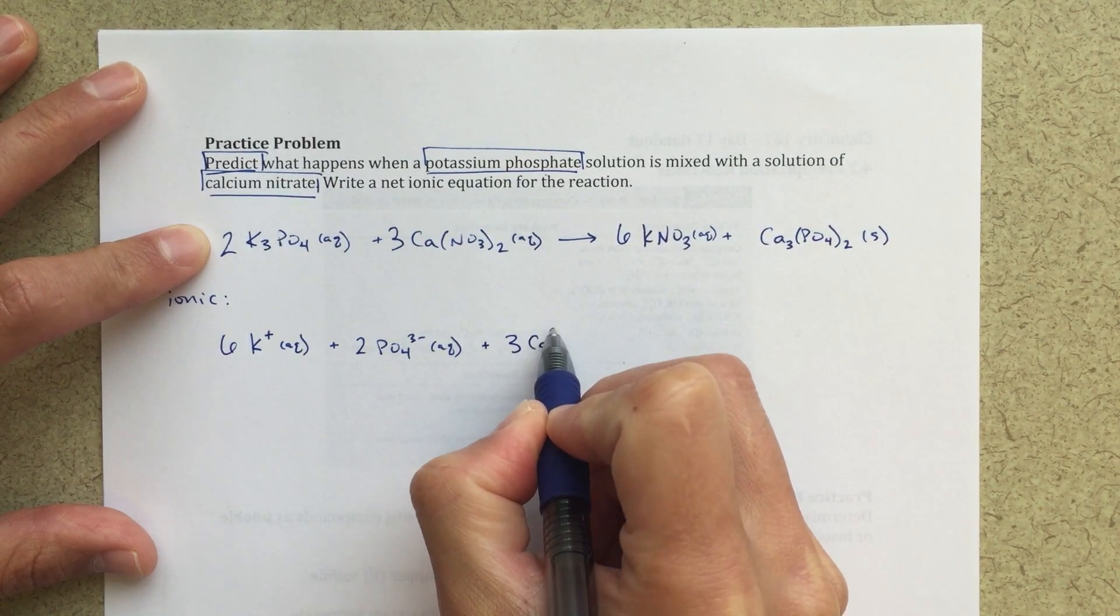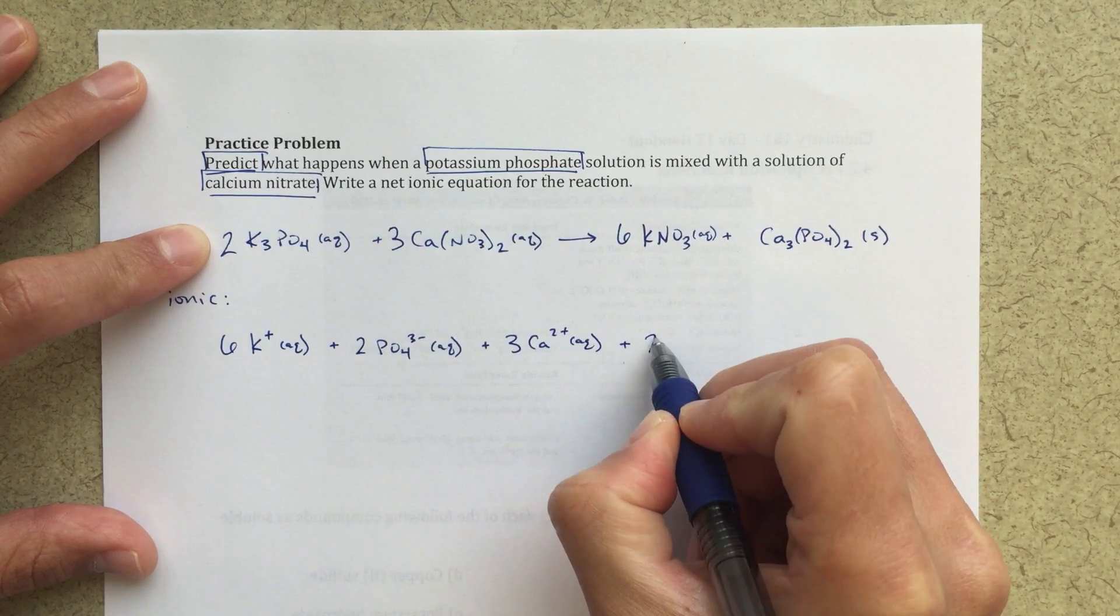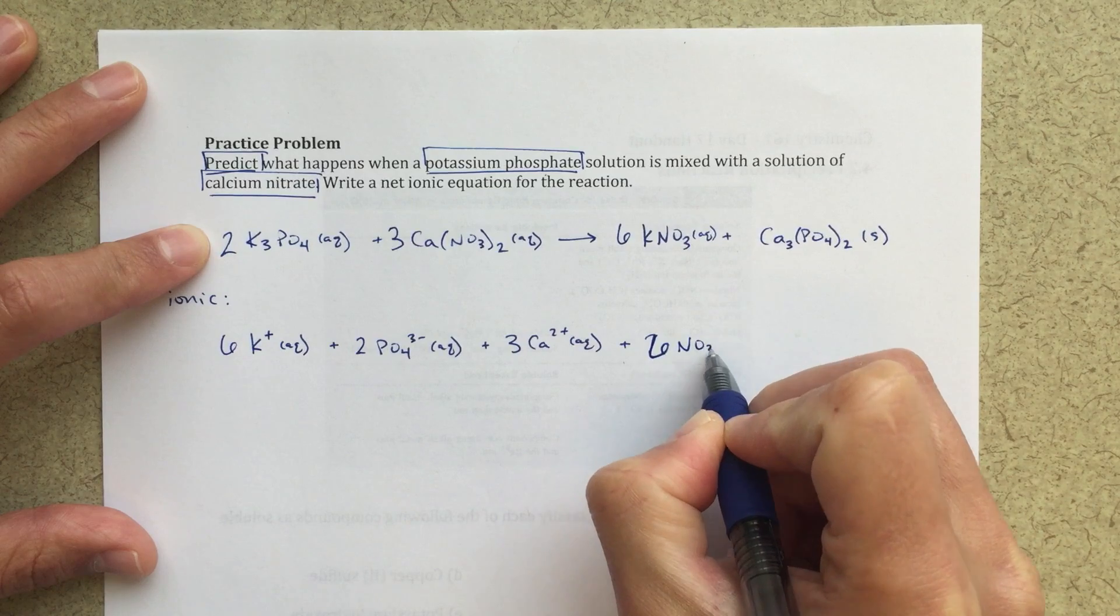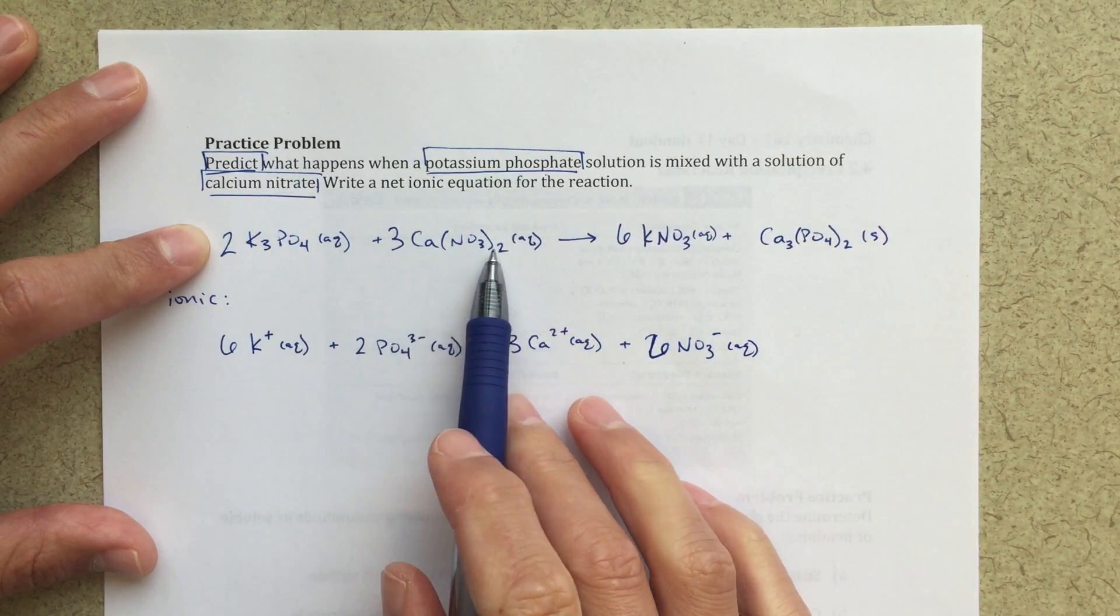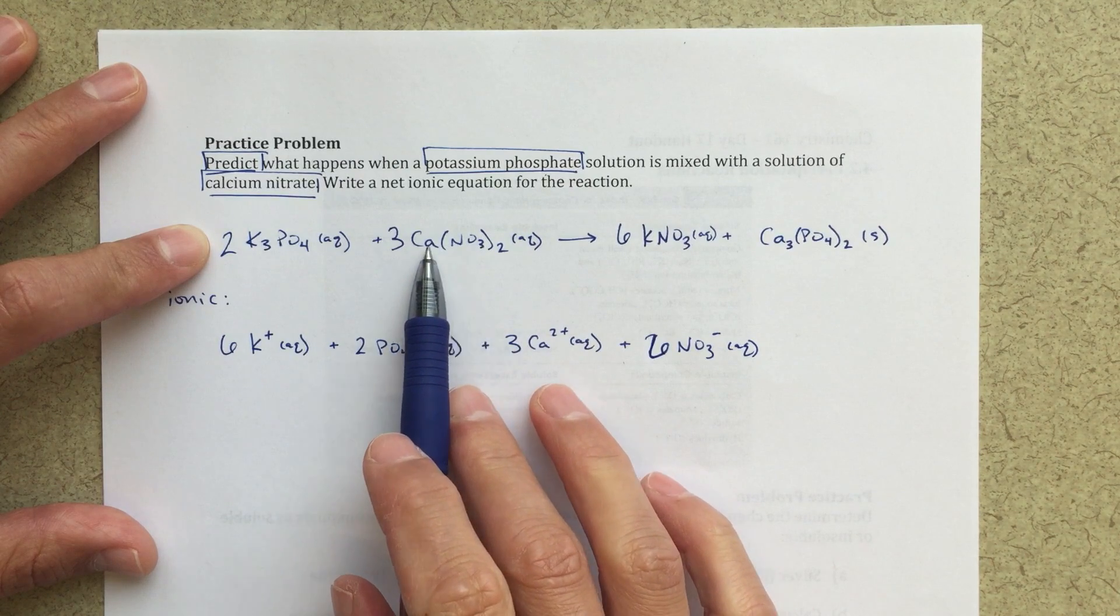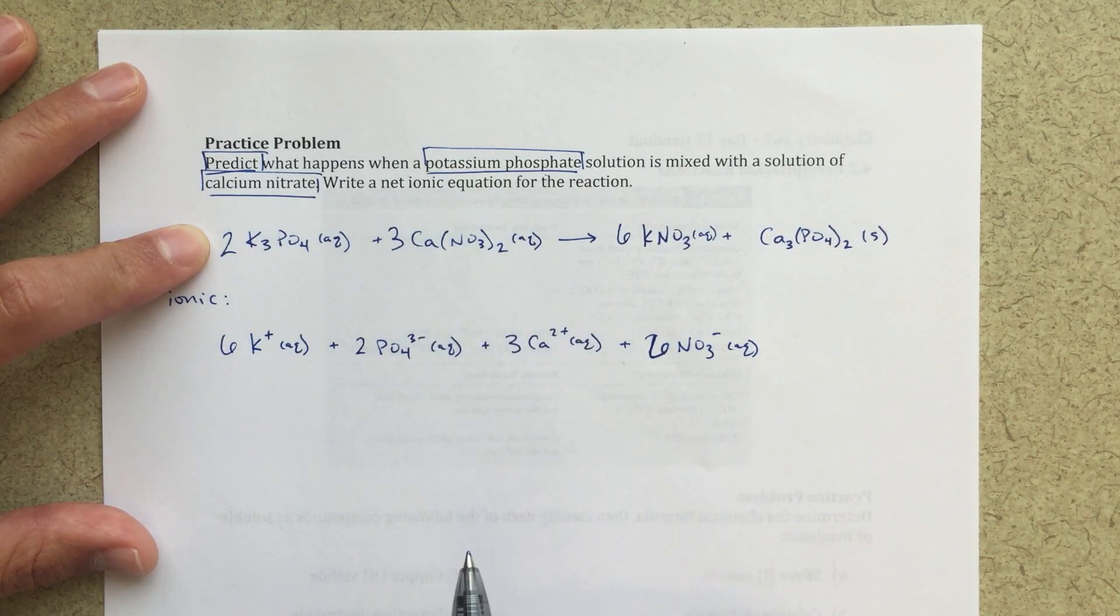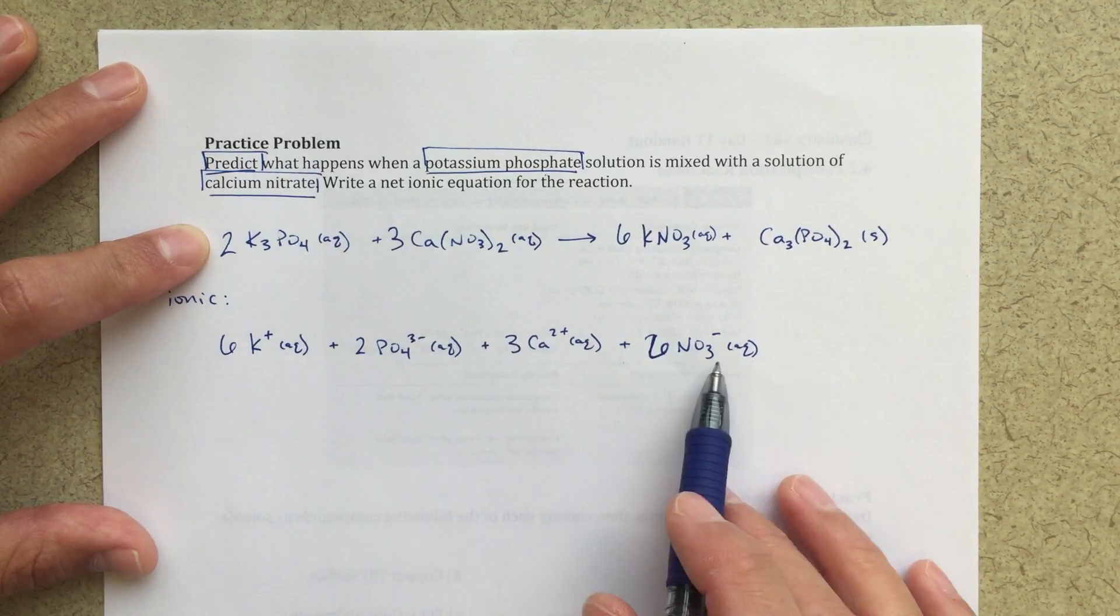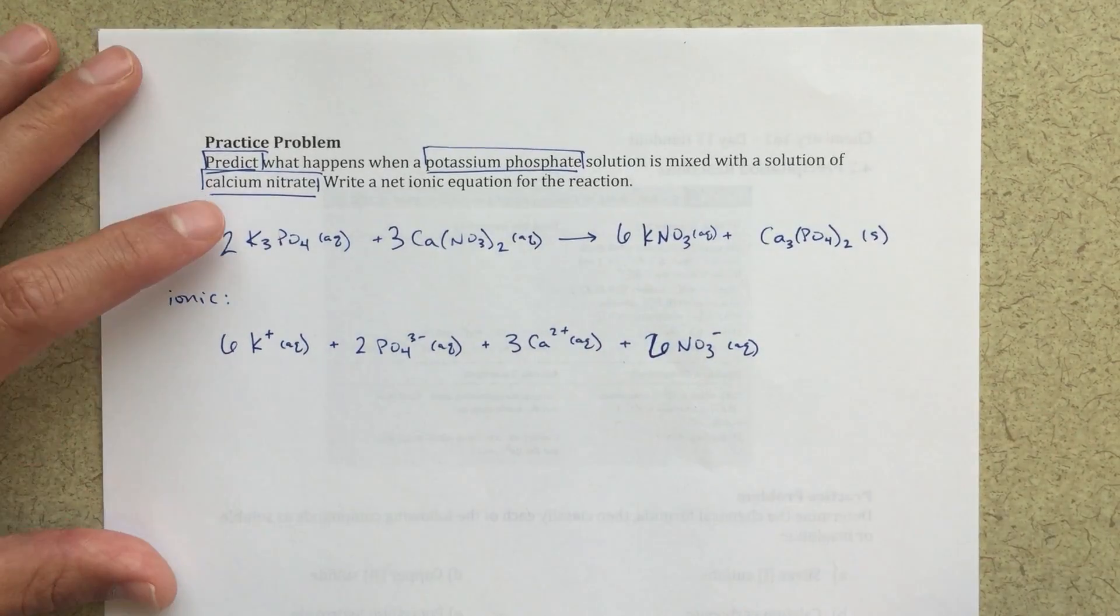So three K plus aqueous plus three Ca2 plus aqueous plus six now. It's going to be six NO3 minus ions. So three times two. So I've got two for every one of these calcium nitrates. And then three of those, so that's going to be six NO3 minus ions. Those are all of my different ionic species that will be present when I first mix the two solutions together.